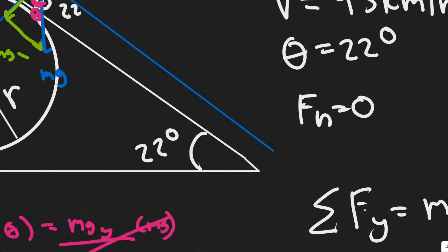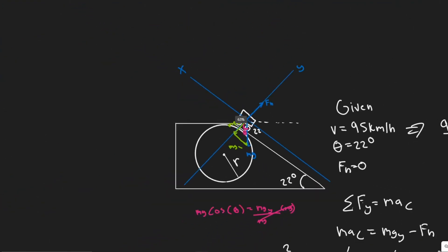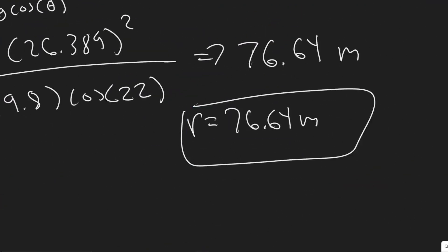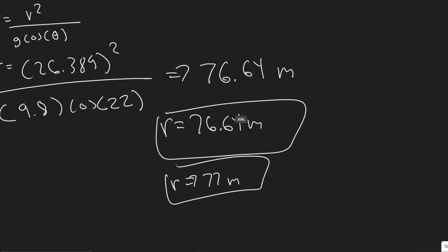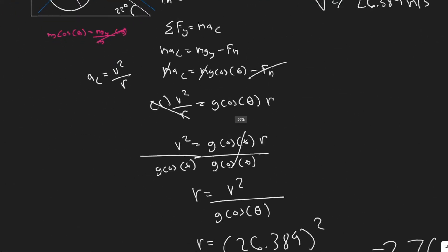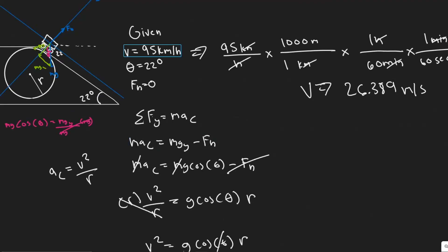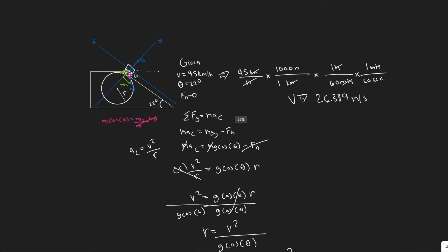if we still want to be touching. So at that point is our normal force is zero. So it's about 77 meters, or however you would like to round. Just make sure you do it how your teacher wants you to. But about 77 meters, just round how you'd like. That's going to be our minimum value of the radius in order for us to still be touching with this speed and this angle.